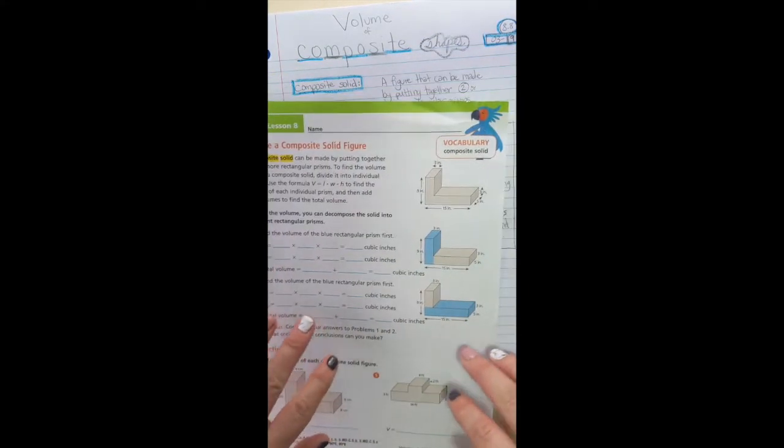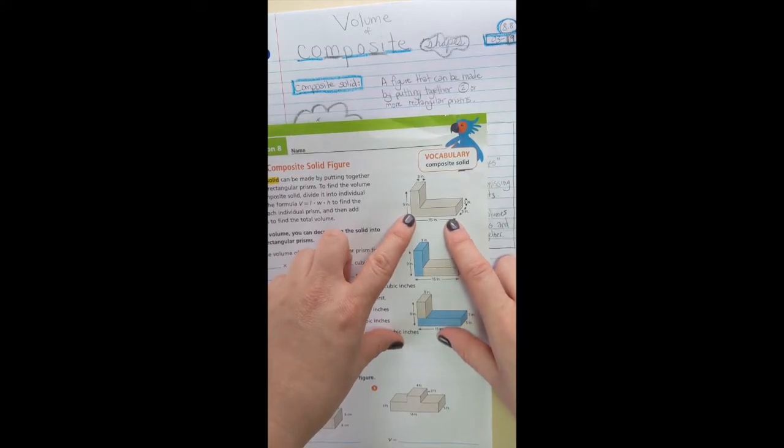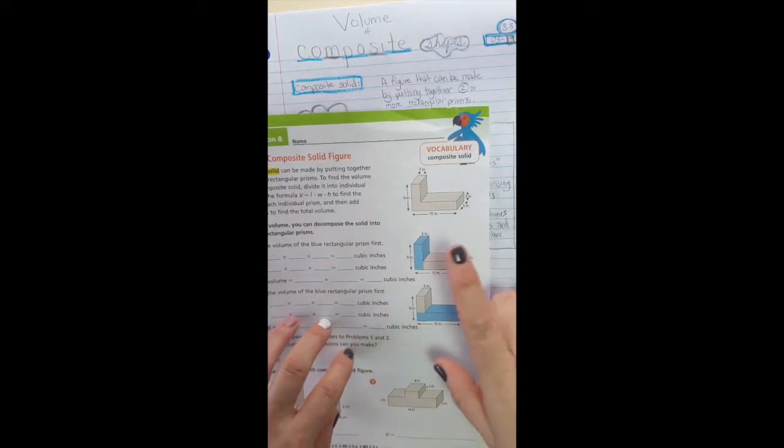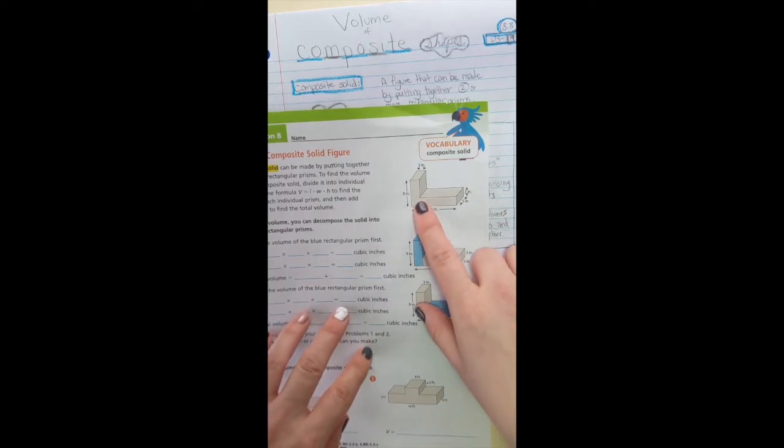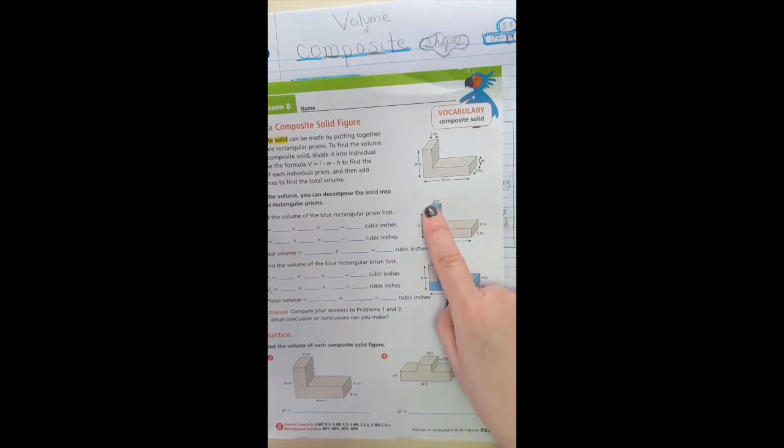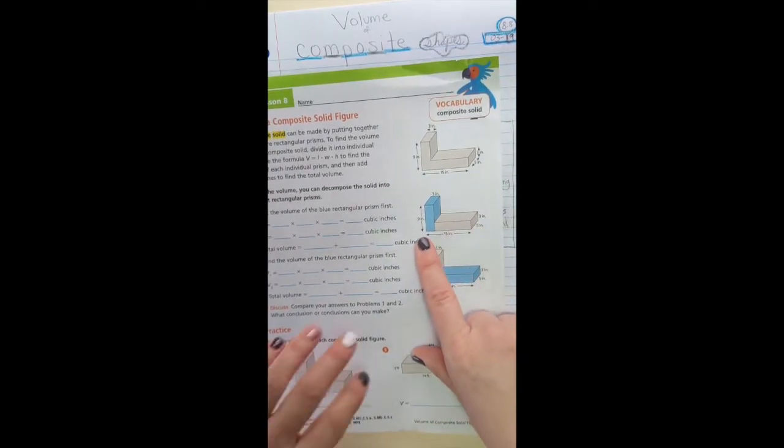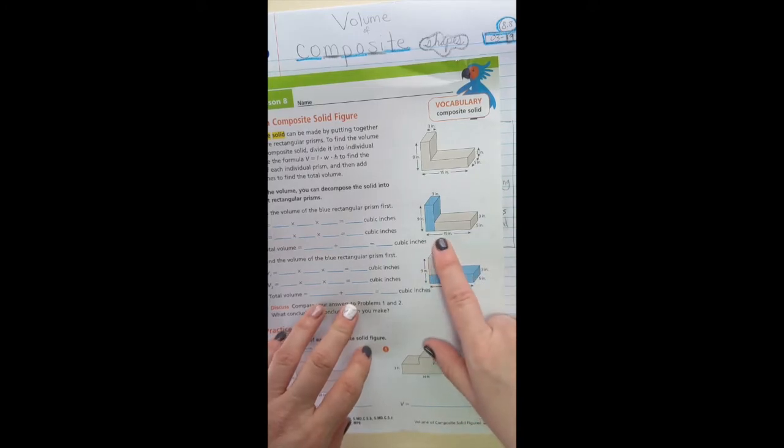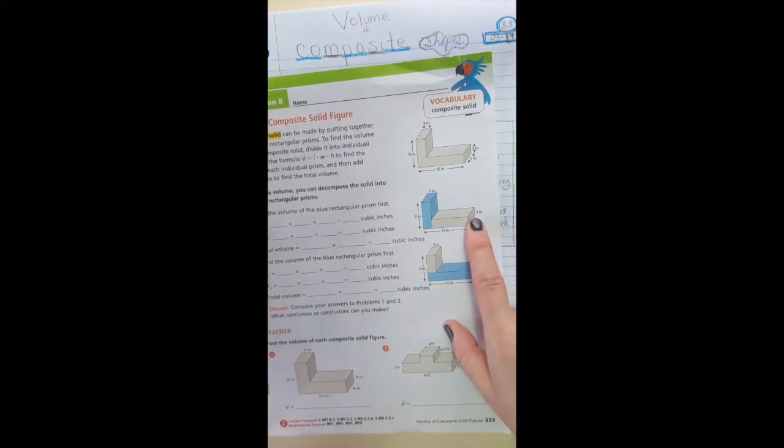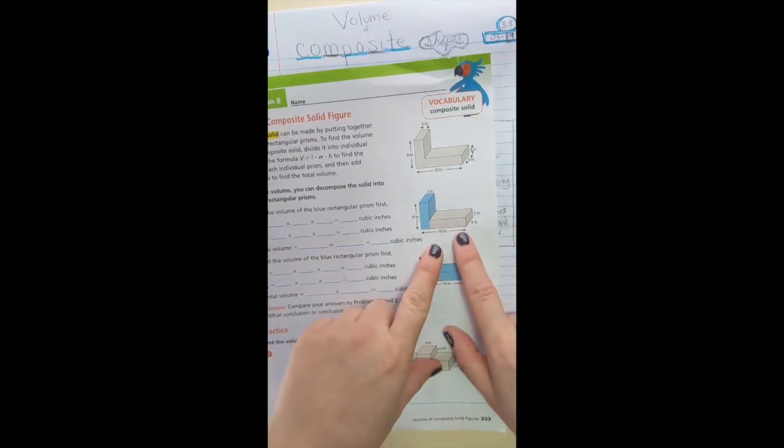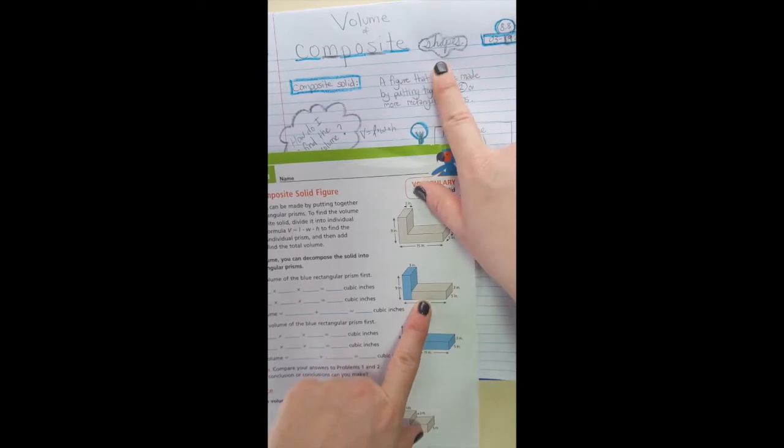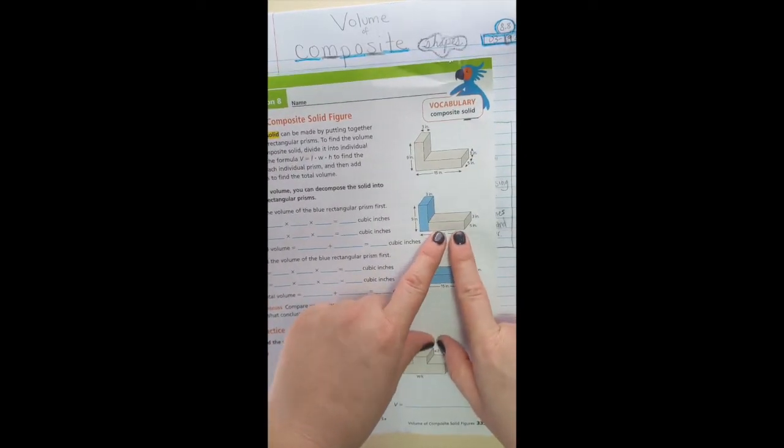So let's take a look at our first shape right here. Actually, that's not my favorite because it's not showing you the two different prisms. So let's actually look at the second shape right here. It's kind of an L shape. You can see that. You can see that the length from left to right is 15 inches. The width is 5 inches. The height is 3 inches on this gray prism. Hey, look. We chose blue and gray, and these shapes are blue and gray, so that's pretty cool.